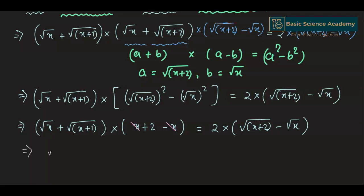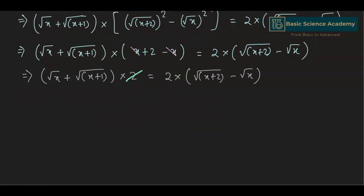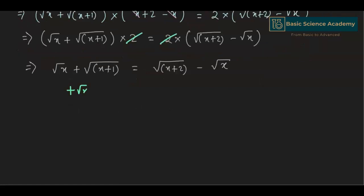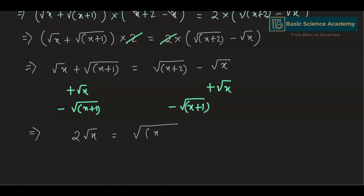So this gives us (square root of x + square root of (x+1)) multiplied by 2 equals 2 times square root of x. Adding square root of x to both sides and subtracting square root of (x+1) from both sides gives us 2 square root of x equals square root of (x+2) minus square root of (x+1).